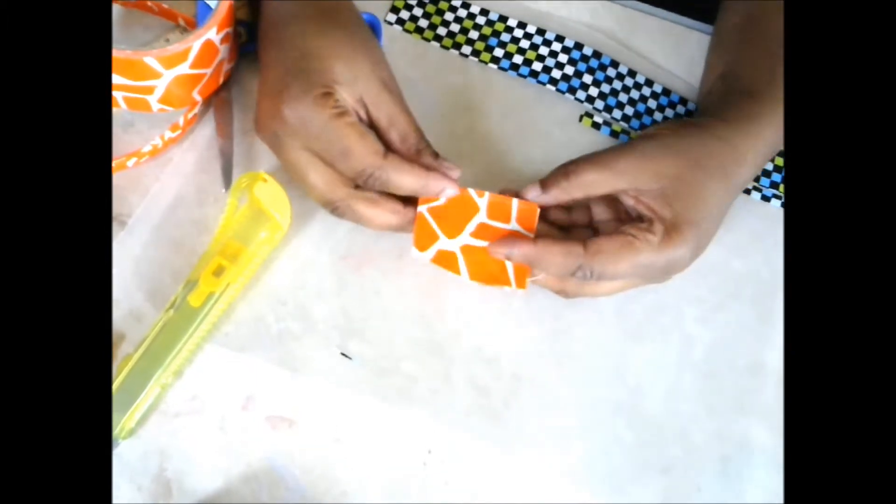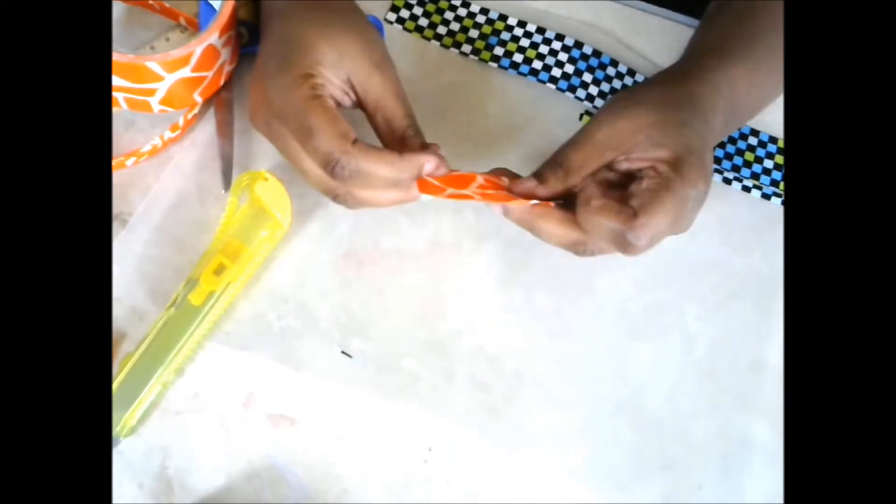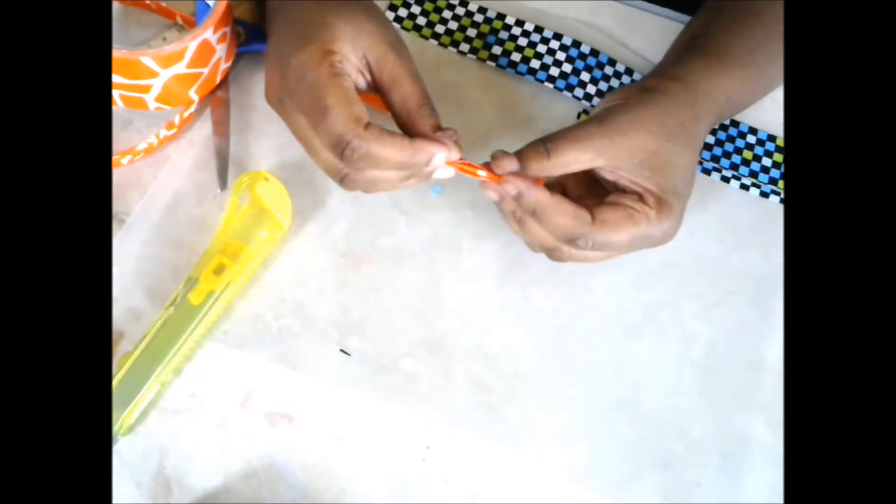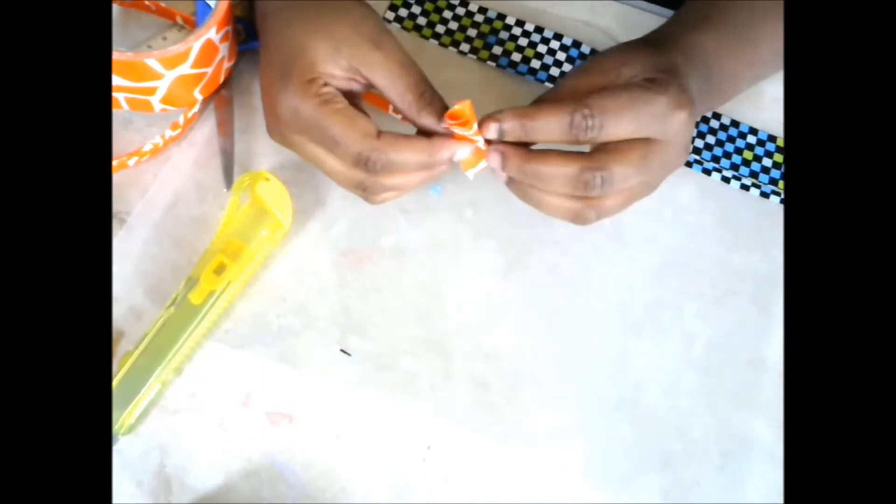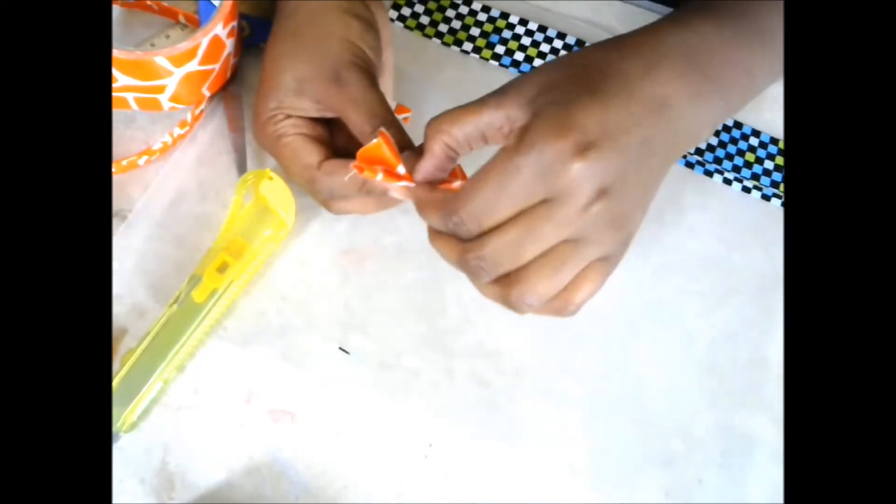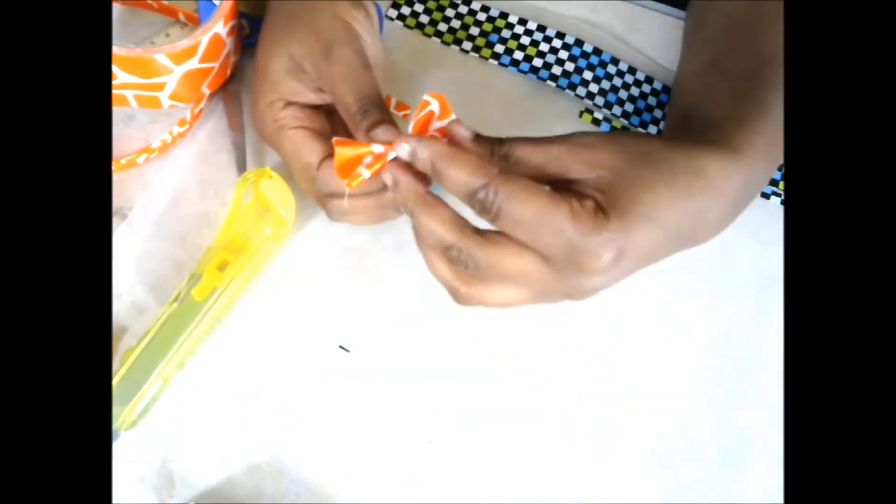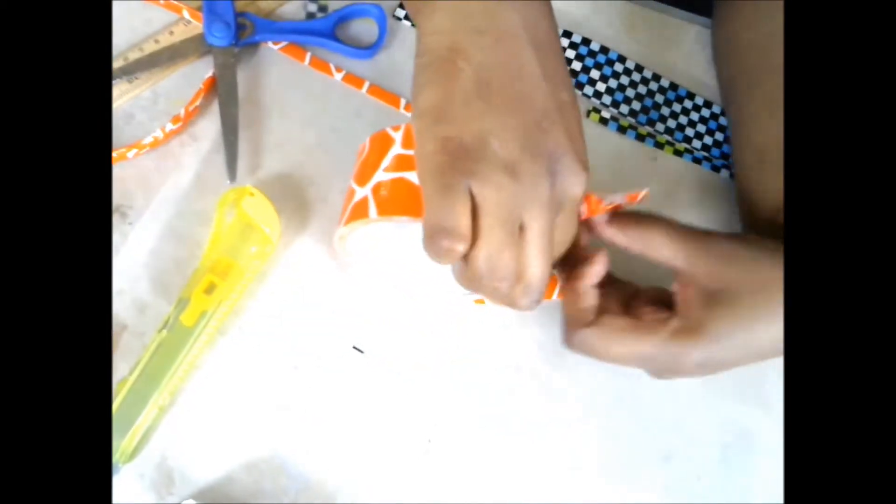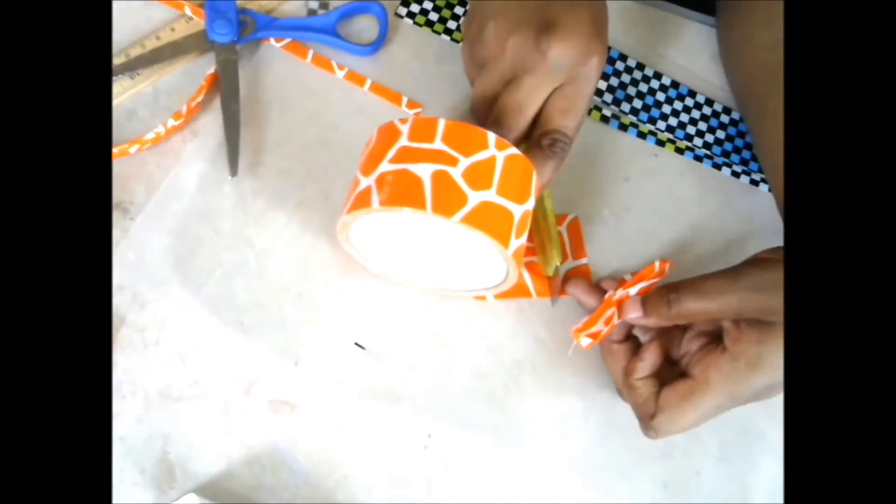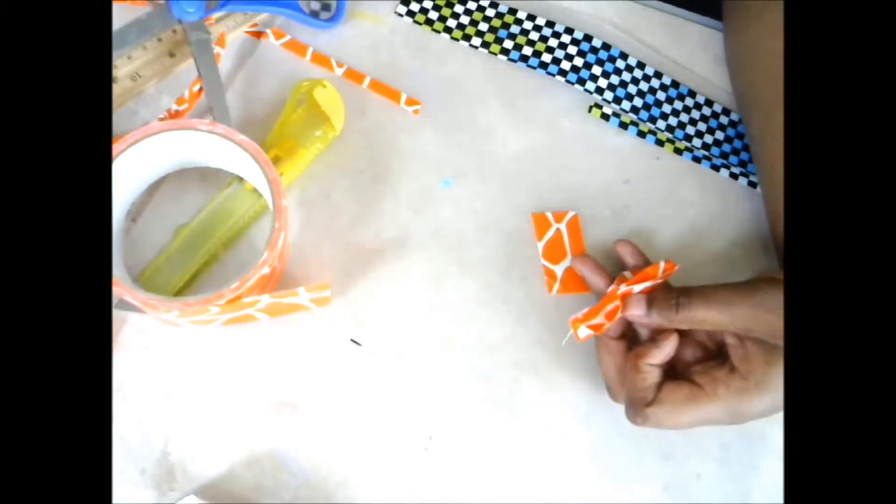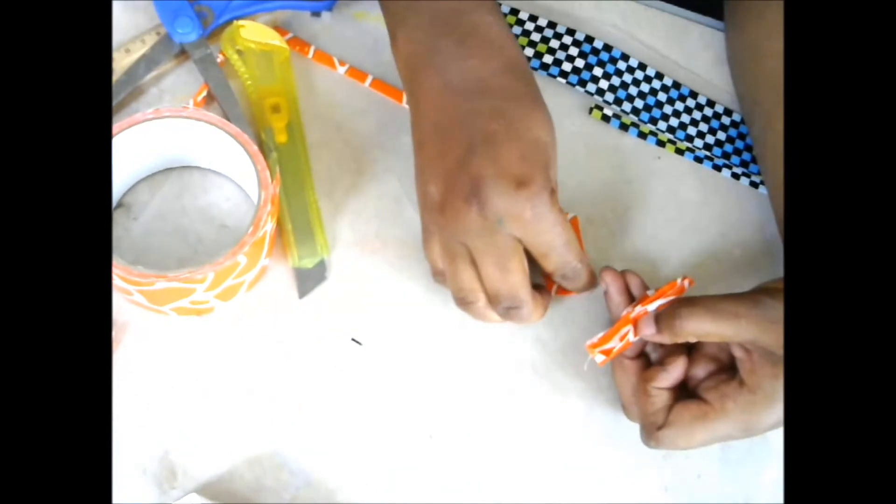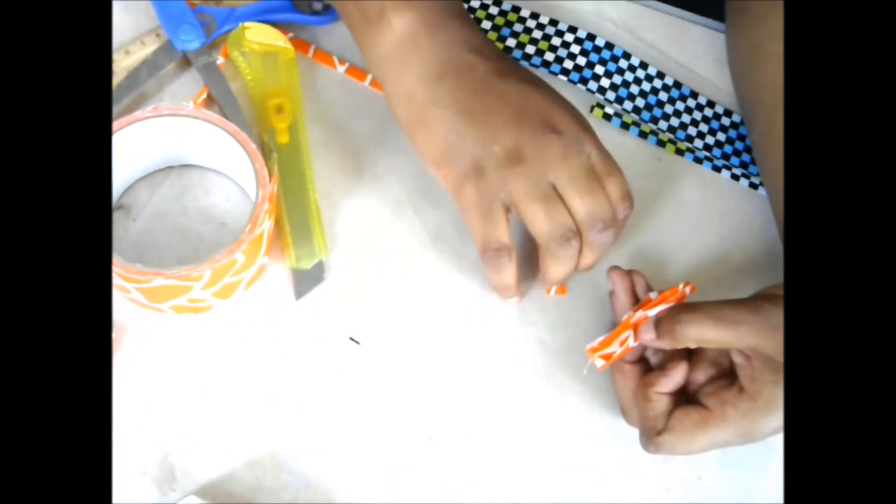Then you're just going to pleat it. You'll go like this, and like that, and like that. And you create a little pleat. Just like that. Very good. Then you can take a piece of your duct tape and you're going to do an inch or half an inch. Maybe a little bit smaller actually. Just like that. Peel that up.